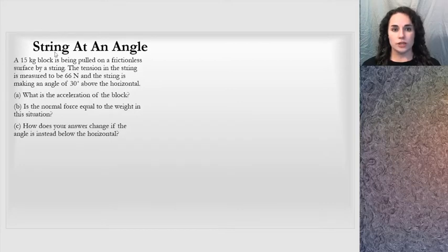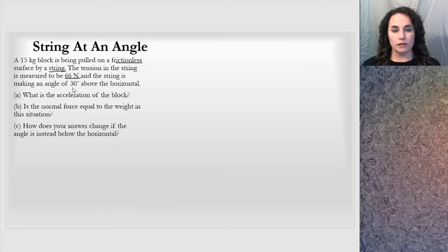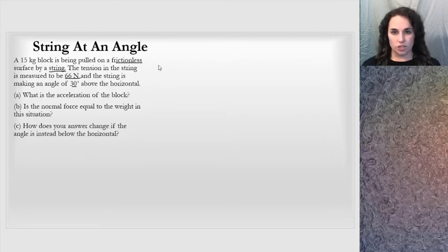The first problem is 'string at an angle.' A 15-kilogram block is being pulled on a frictionless surface by a string. The tension in the string is measured to be 66 Newtons, and the string makes an angle of 30 degrees above the horizontal. There's a lot of information there, so I'm going to start writing it down and get a general sketch going. They tell me a mass: 15 kilograms.